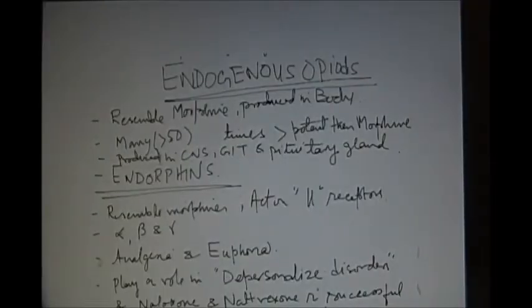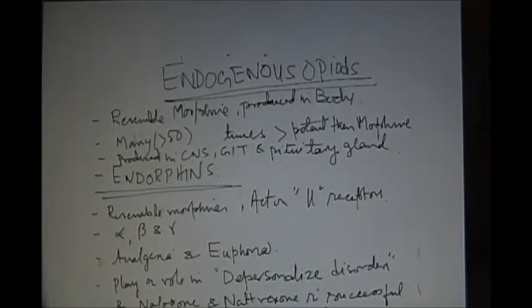The endogenous peptides. The endogenous peptides are produced in the body and they resemble morphine. They are about 80 times more potent than morphine. They are produced in the CNS, GIT and pituitary glands.